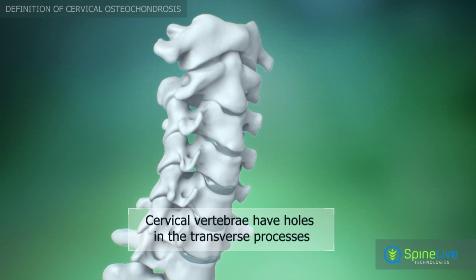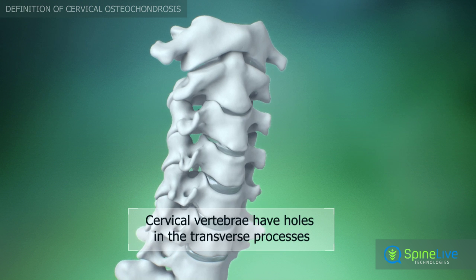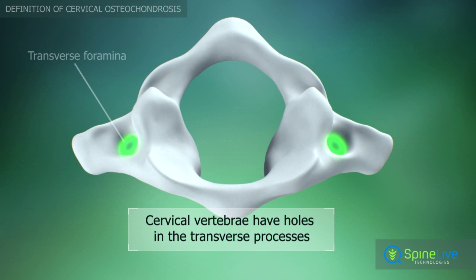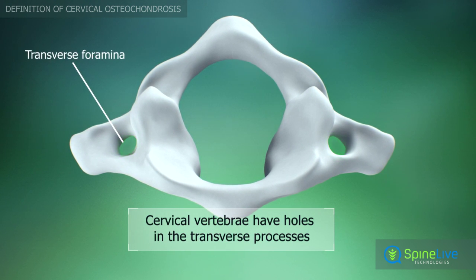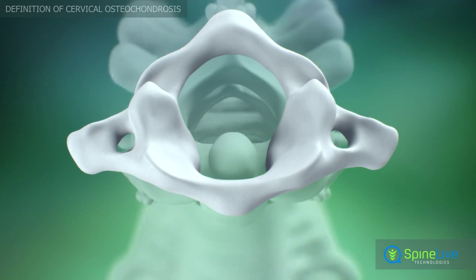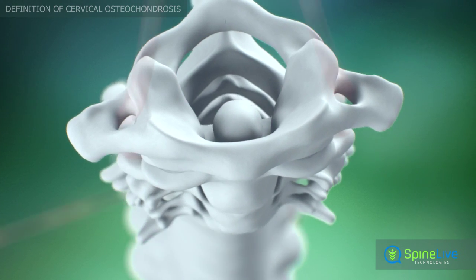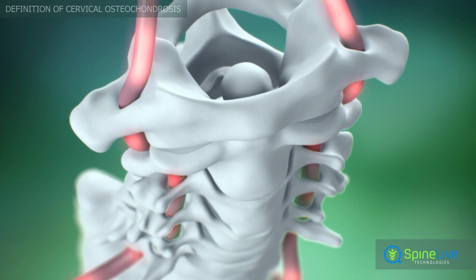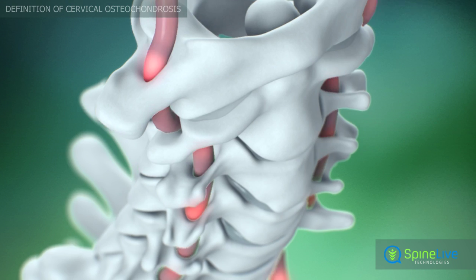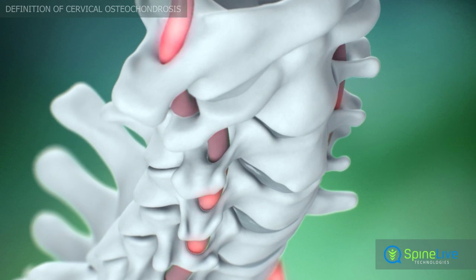Cervical vertebrae are different from other vertebrae because they have holes in the transverse processes called transverse foramina. Arteries which supply the brain with blood come from the neck through these holes.